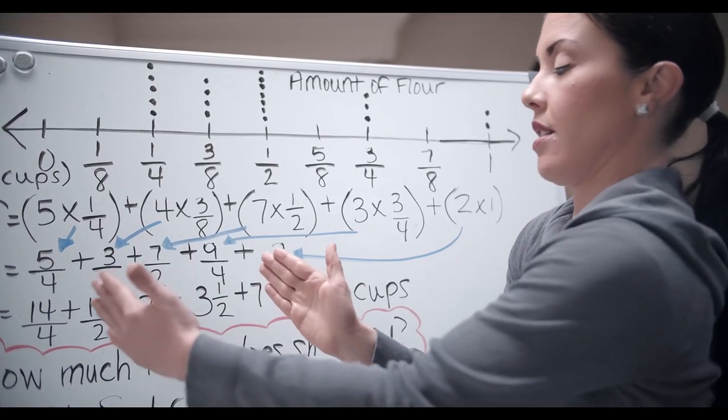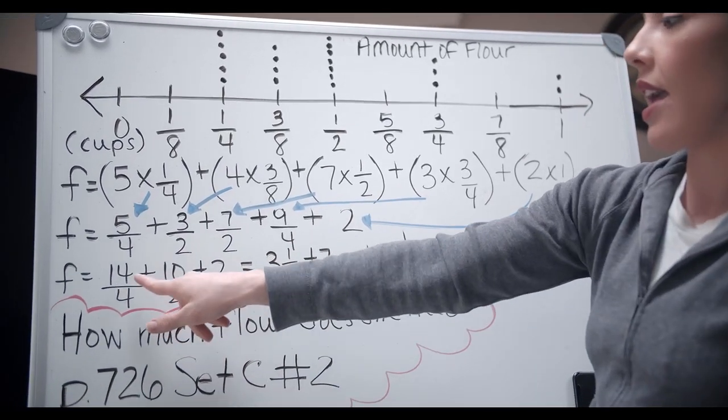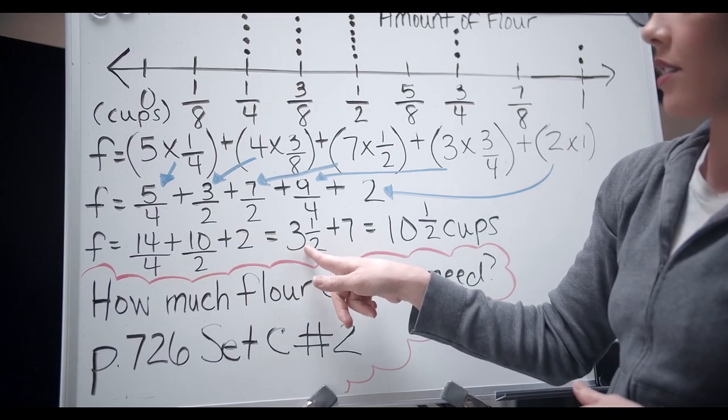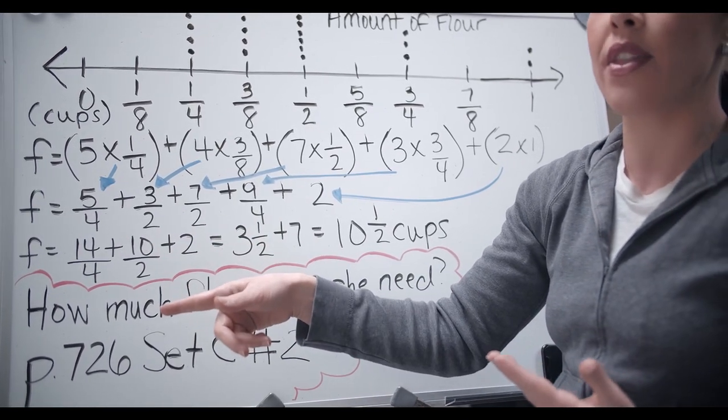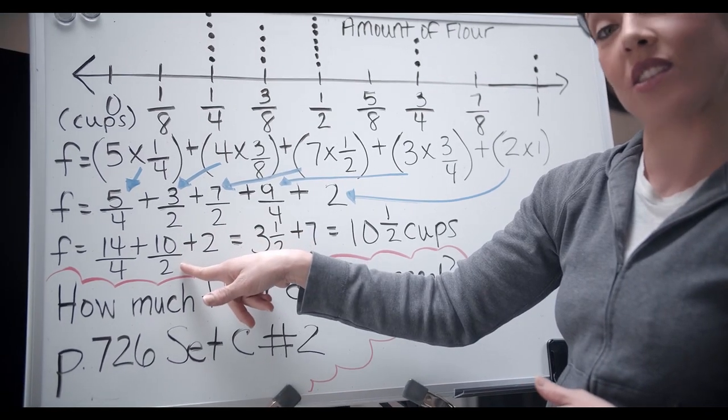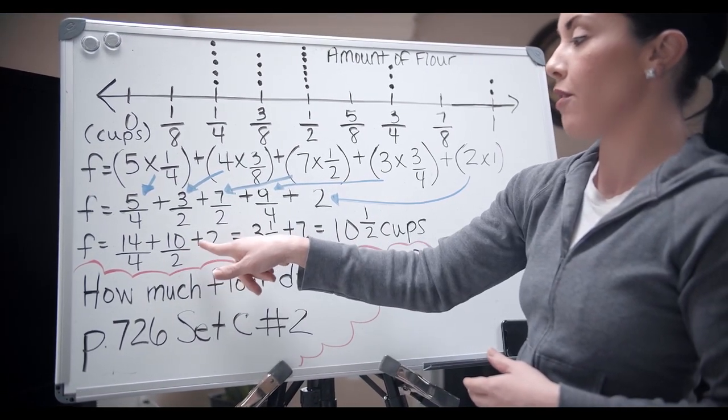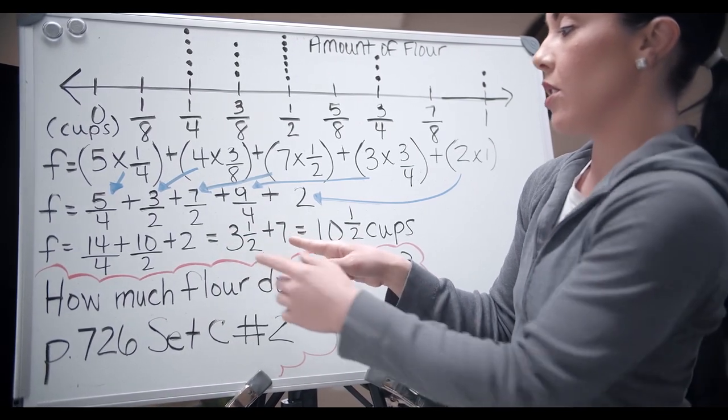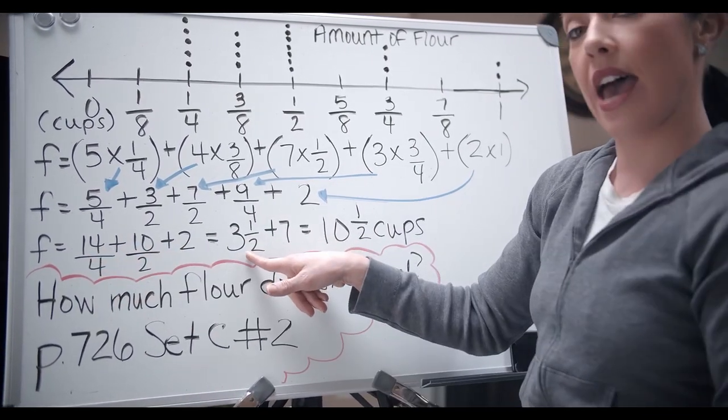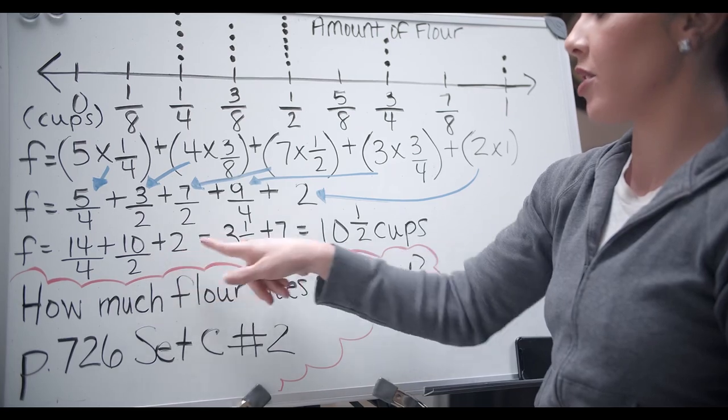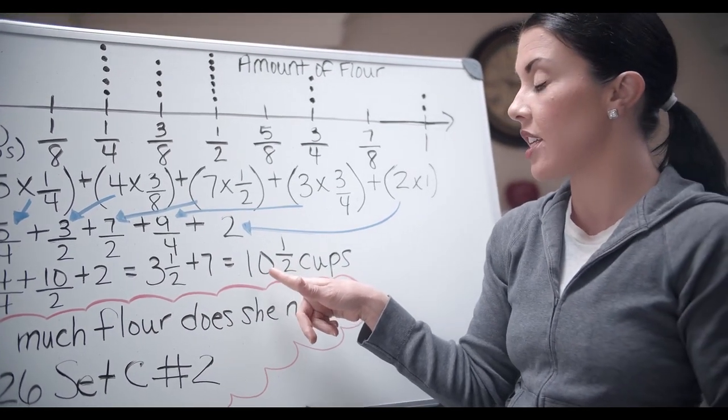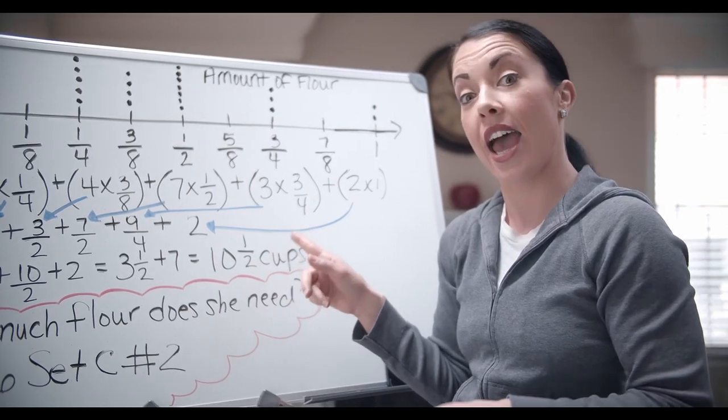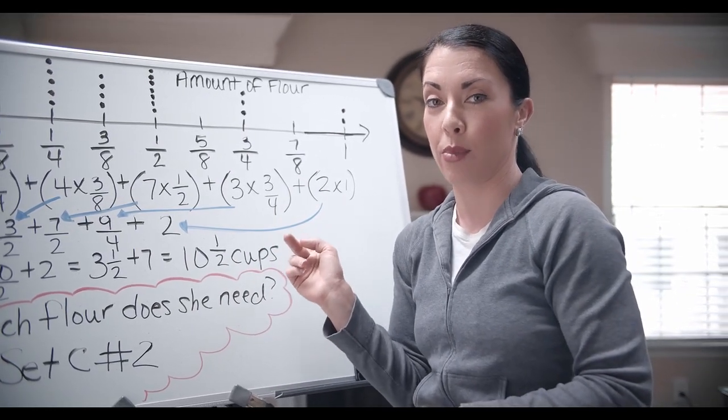So when I do more simplifying, I get fourteen divided by four. Well, that's three and a half plus ten over two. I really know that means ten divided by two is five. So I add five plus two is seven. So I take my three and a half plus my five plus two is seven. And the answer that I arrive at for this question is ten and a half cups. Again, always remember to label. It's very important.